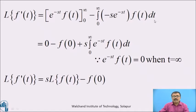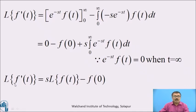Then, for the integral term with respect to t, s is treated as a constant. Taking −s outside the integral sign, minus times minus gives plus s · integral from 0 to infinity of e^(−st)·f(t) dt. Therefore, L{f'(t)} = s·L{f(t)} − f(0).